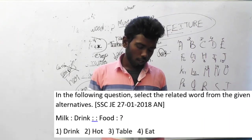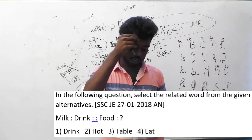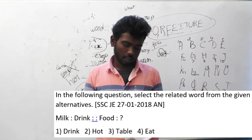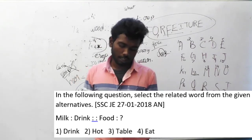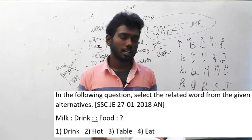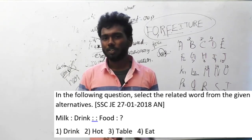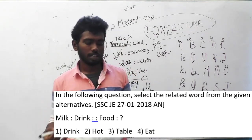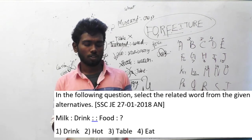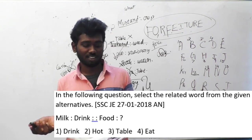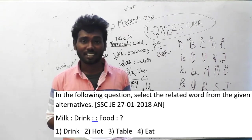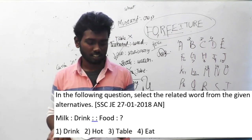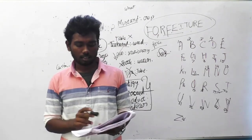Question 160. In the following question, select the related word from the given alternatives. Milk is to drink implies food is to what? What will you do with milk? You will obviously drink it. What will you do with food? You are going to eat the food. You are not going to drink the food or hot the food. So food is to eat is the correct answer — option D.